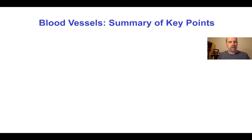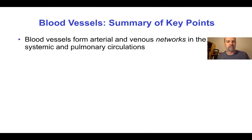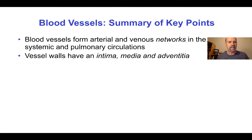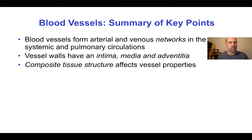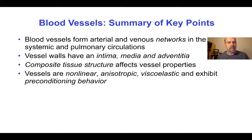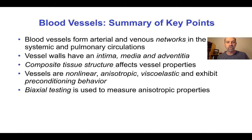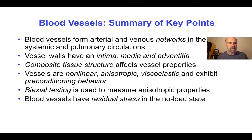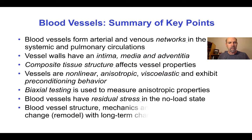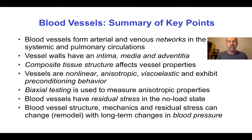In summary, blood vessels form arterial and venous networks in the systemic and pulmonary circulations. The vessel walls have an intima, media, and adventitia. They have a composite tissue structure that affects vessel properties. Vessels are non-linear, anisotropic, viscoelastic, and exhibit preconditioning behavior. Biaxial testing is used to measure anisotropic properties, or sometimes even triaxial testing. Blood vessels have residual stress in the no-load state. And blood vessels' structure, mechanics, and residual stress can all change or remodel with long-term changes in blood pressure.